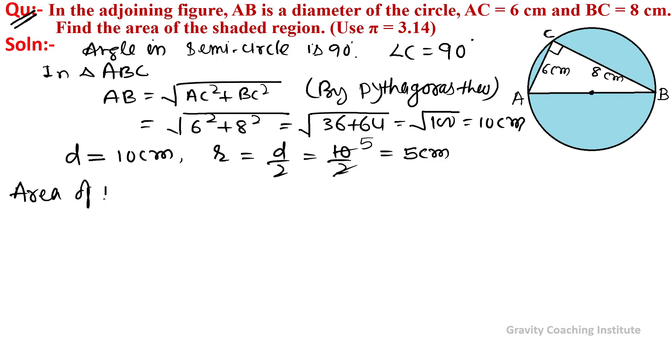Therefore, area of the shaded region equals area of the circle minus area of triangle ABC.